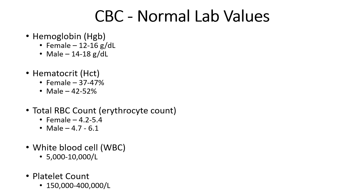Total red blood cell (erythrocyte) count reflects the number of circulating red blood cells per volume of blood: 4.2-5.4 million for females, 4.7-6.1 million for males. Low levels signify anemias, low B6 or B12, malnutrition, or internal blood loss. White blood cell count is typically 5,000-10,000. Lower levels are seen with cancer treatment, bone marrow suppression, or leukemia. Higher levels are associated with infection, inflammation, injury, or certain cancers.